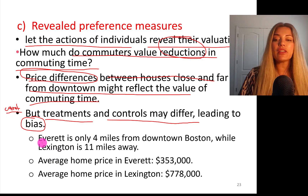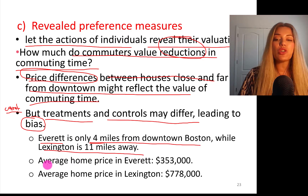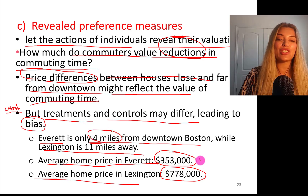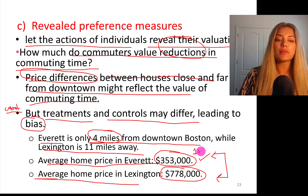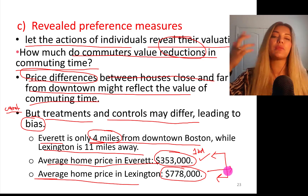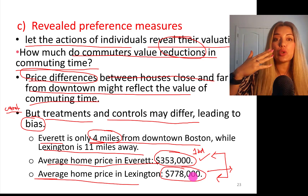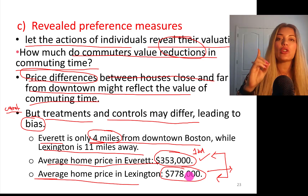For instance: Everett is only 4 miles from downtown Boston while Lexington is 11 miles away. The average home price in Everett is $353,000 versus Lexington, which is more expensive. So how is it possible that a neighborhood closer to downtown has cheaper homes? You need to control for other properties of homes — maybe these are smaller homes without desirable features, while Lexington has larger homes with fireplaces, pools, and great school districts. Therefore, we need to control for properties using regression analysis.